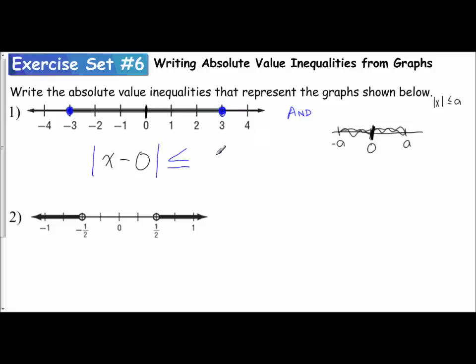So it's less than or equal to three. But that's not simplified because you never show minus zero. So we would just do the absolute value of x is less than or equal to three. And that is the absolute value inequality represented by this graph.